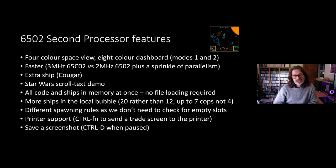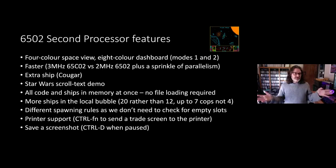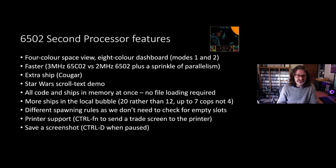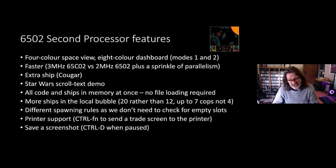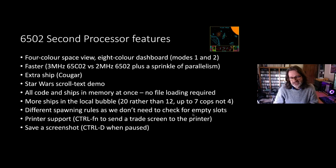There's an extra ship in the second processor version — the Cougar. There's a Star Wars-like scroll text demo with text going up the screen. Because of the extra memory, everything is loaded into memory at once — all code and all ships — so there's no disk access required during the game. You can also have more ships in the local bubble: up to 12 in the original Elite, up to 20 in the 6502 second processor version, with up to seven cops in the area rather than just four, so if you fire at the station you'll die a lot more quickly.